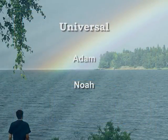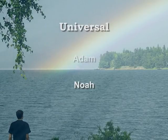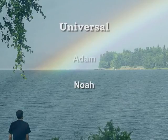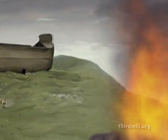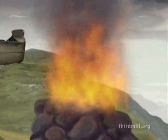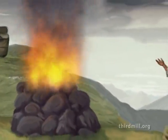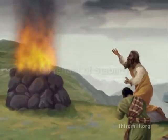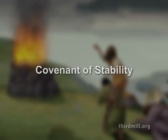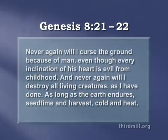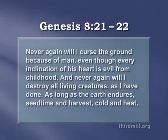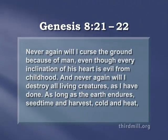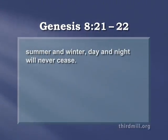The second universal covenant is God's covenant with Noah. This covenant is explicitly mentioned in Genesis chapters 6 and 9. In Noah's covenant, God took into account human propensity for sin and extended patience toward us by providing stability in nature. For this reason, we may speak of this covenant as the covenant of stability. As God said in Genesis chapter 8 verses 21 and 22: Never again will I curse the ground because of man, even though every inclination of his heart is evil from childhood. And never again will I destroy all living creatures as I have done. As long as the earth endures, seed time and harvest, cold and heat, summer and winter, day and night will never cease.